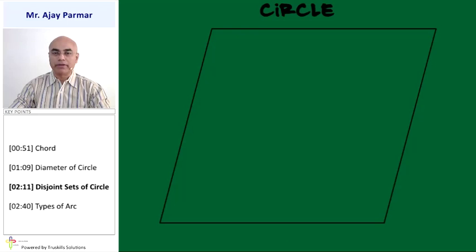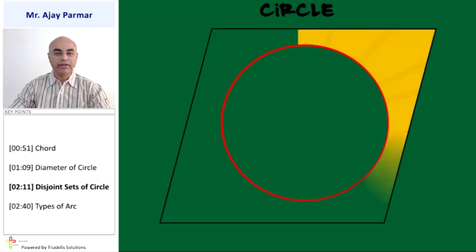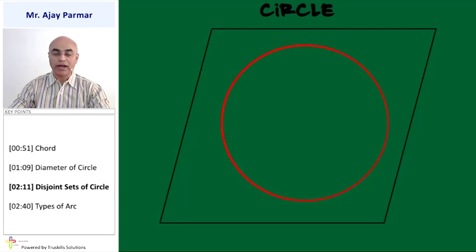A circle will divide its plane into three disjoint sets: the circle itself (only the arc part), the interior of the circle (which does not include the arc part), and the exterior of the circle (which does not include the arc or the interior of the circle). These are the three disjoint sets: the circle, the interior of the circle, and the exterior of the circle.